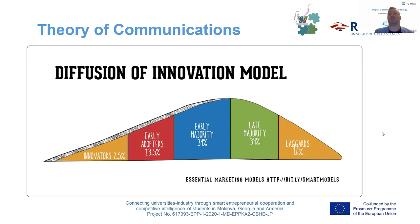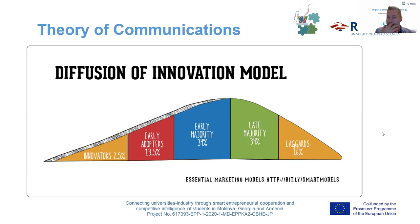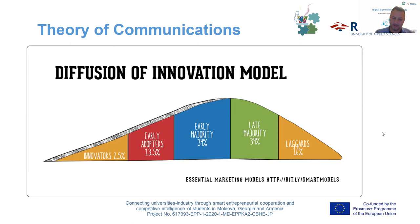Innovators represent 2.5% of the market share and are described as active information seekers, always looking for the latest information. As a snapshot in our environments — universities and organizations — a good example could be Snapchat Spectacles or smart gadget technologies used nowadays in different industries, which brilliantly represents the innovators segment.